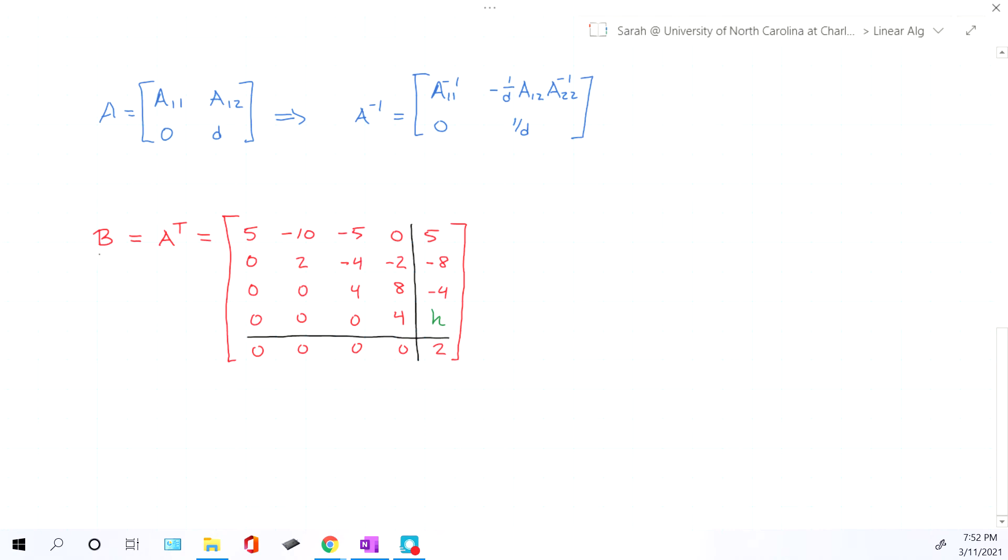And then A22 is this guy. Or since this guy is now named B, I'm going to go ahead and rename this. This would be B12. This whole guy here would be B11. This guy here is your zero matrix or B21. And this guy here is B22, or in the formula, the same thing as your D.